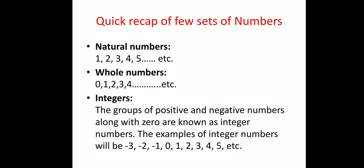What are integers? The group of positive and negative numbers along with 0 are known as integer numbers. For example, integers include numbers like −3, −2, −1, 0, 1, 2, 3, 4, and so on. In other words, if I include the negatives of natural numbers in the set of whole numbers, then this particular set will be known as integers.